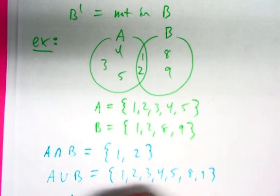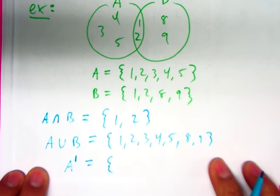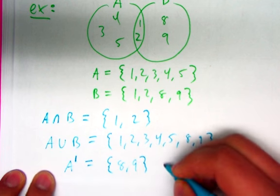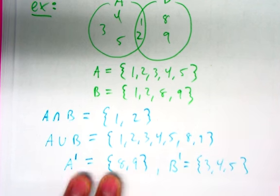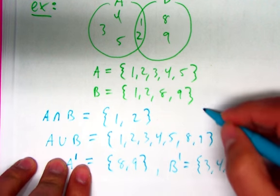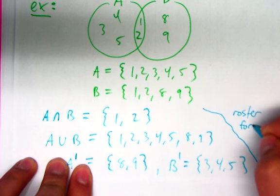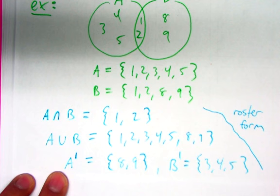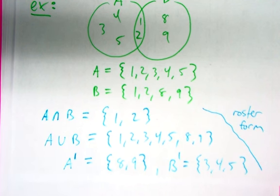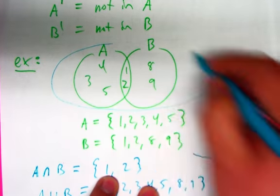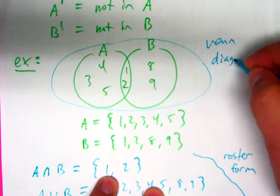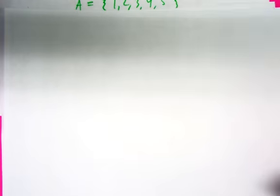What about A complement? That would be 8 and 9. And B complement would be 3, 4, 5. If you see directions that say 'roster form,' that's what we just did — listing everything in the set. The directions might say list your answer in roster form, and this is what you do. Also, this picture is called a Venn diagram. A Venn diagram is any picture that has sets either overlapping or not overlapping.